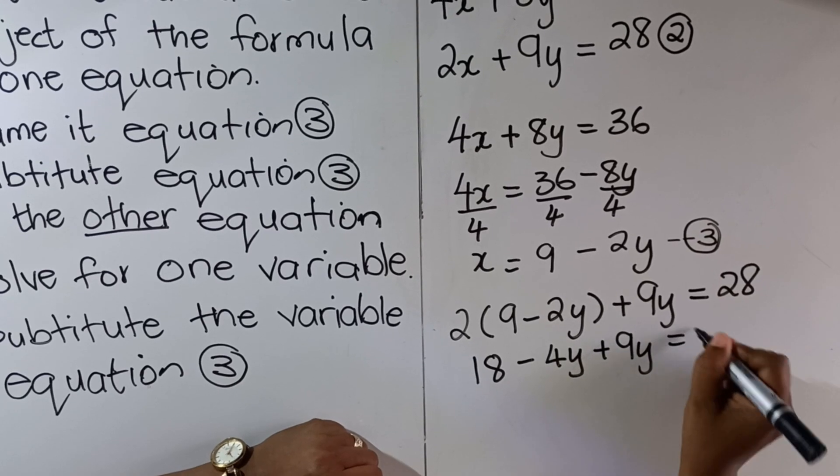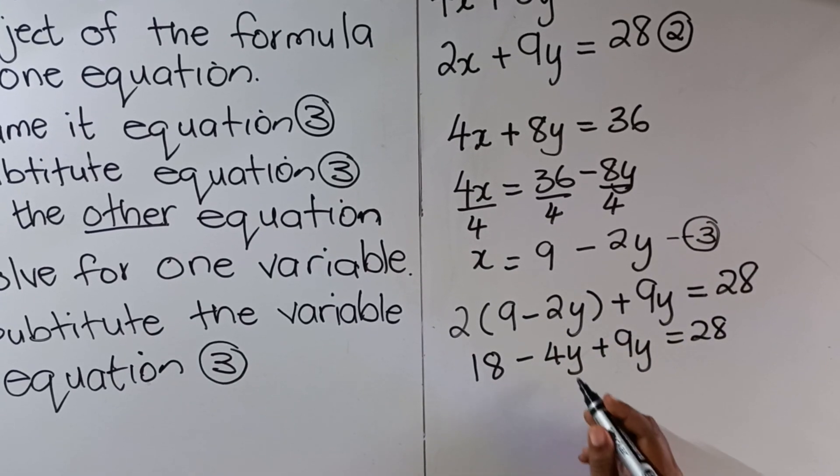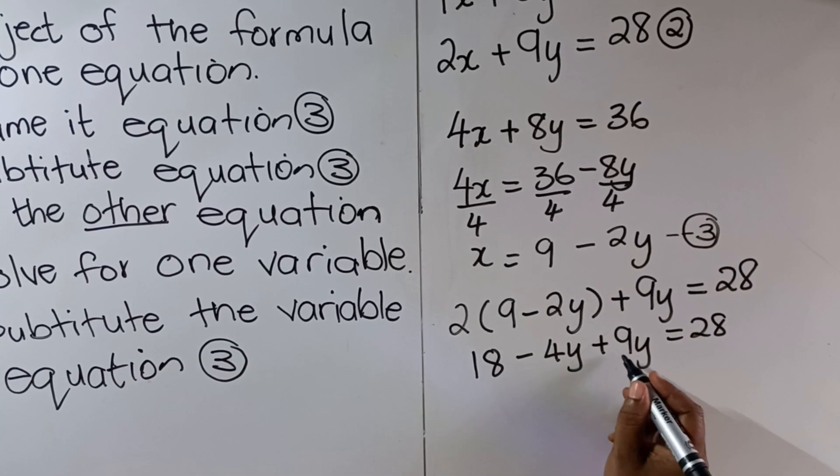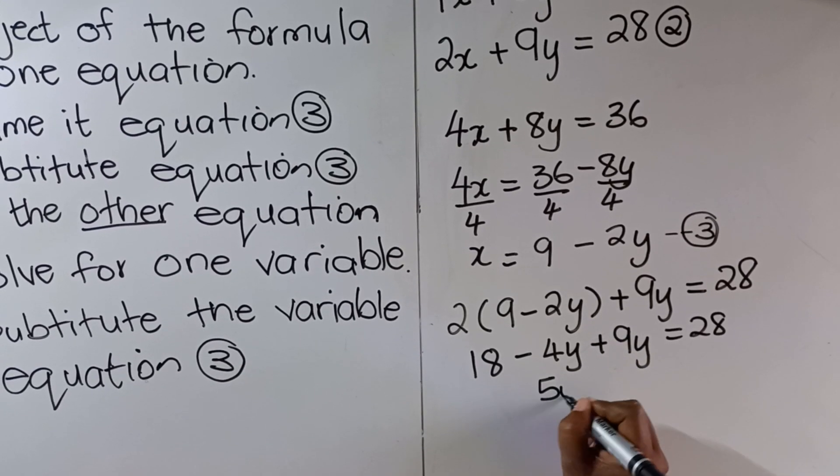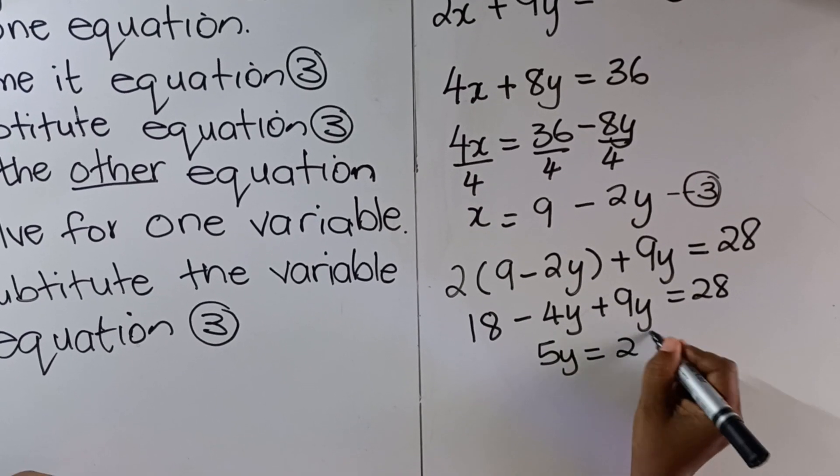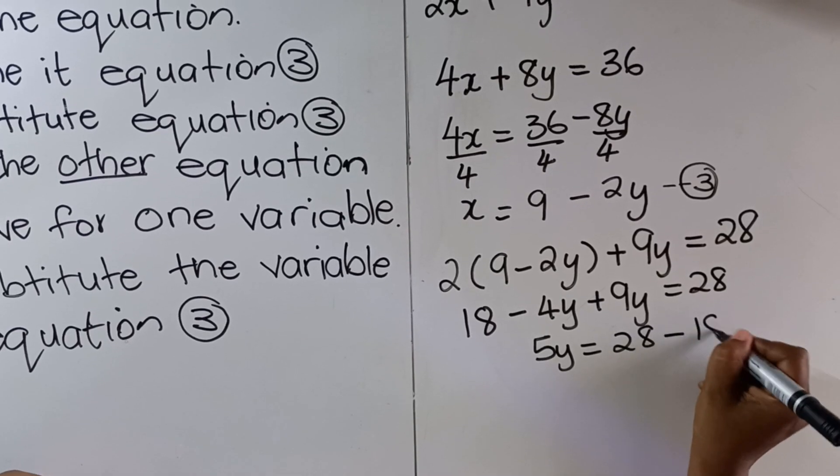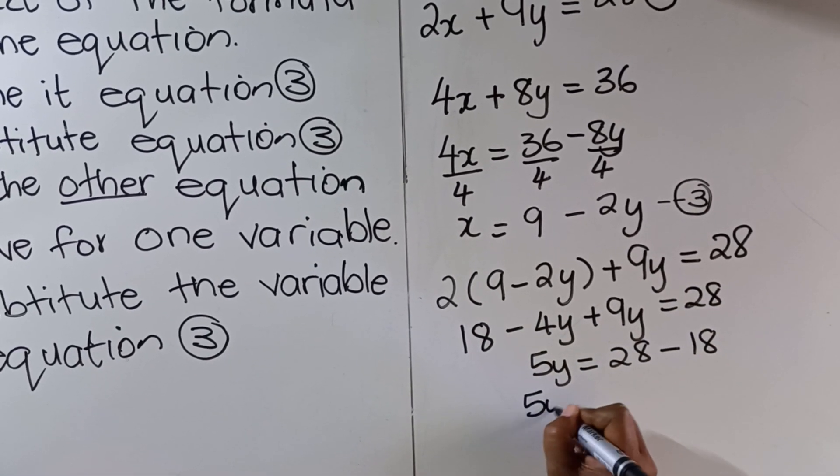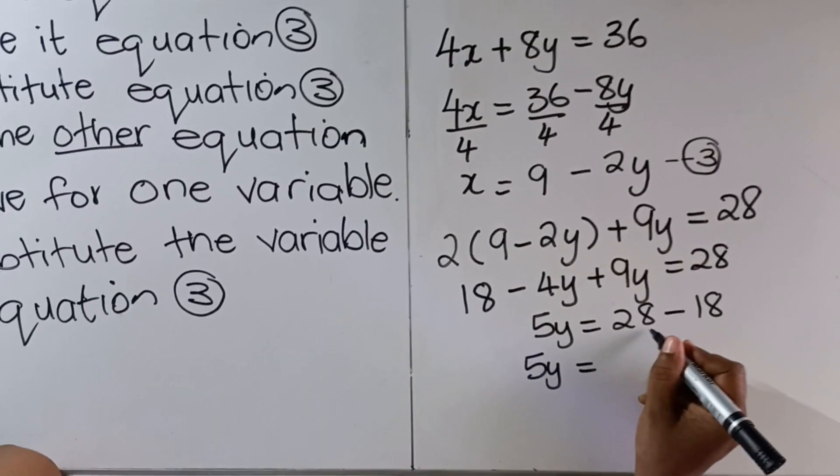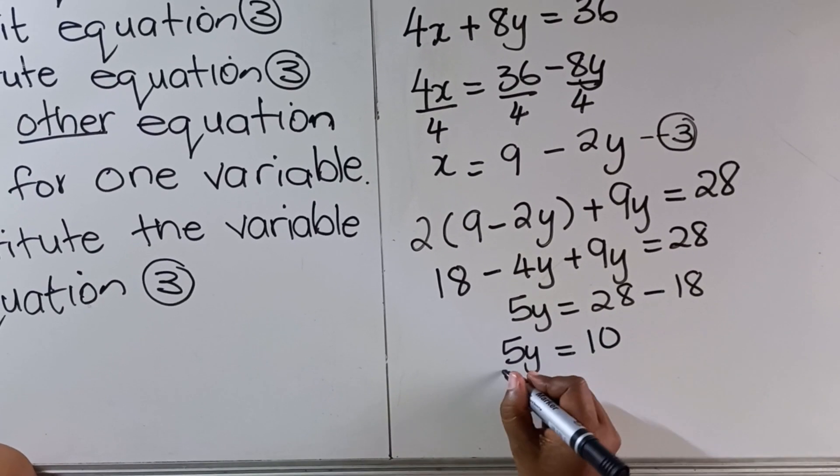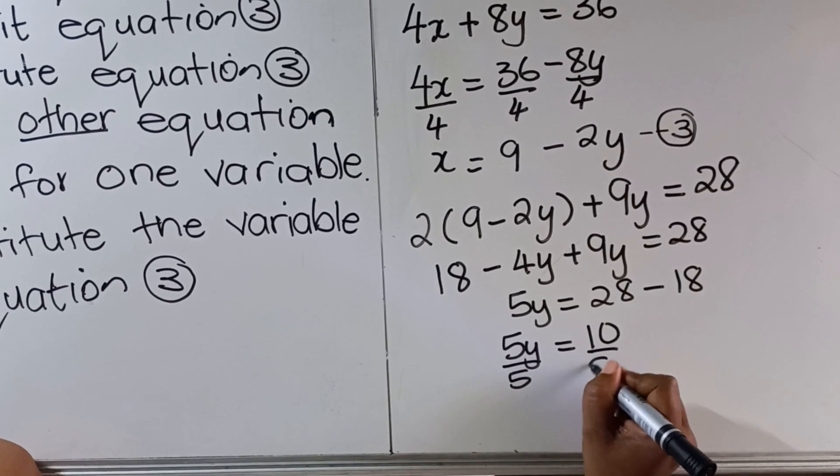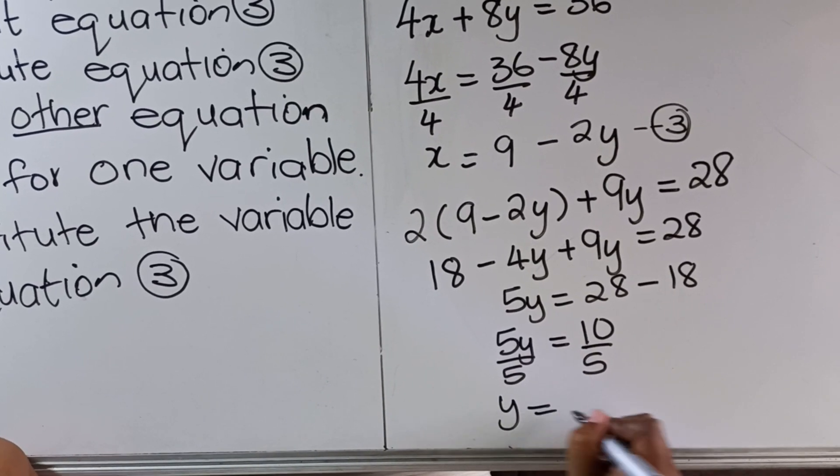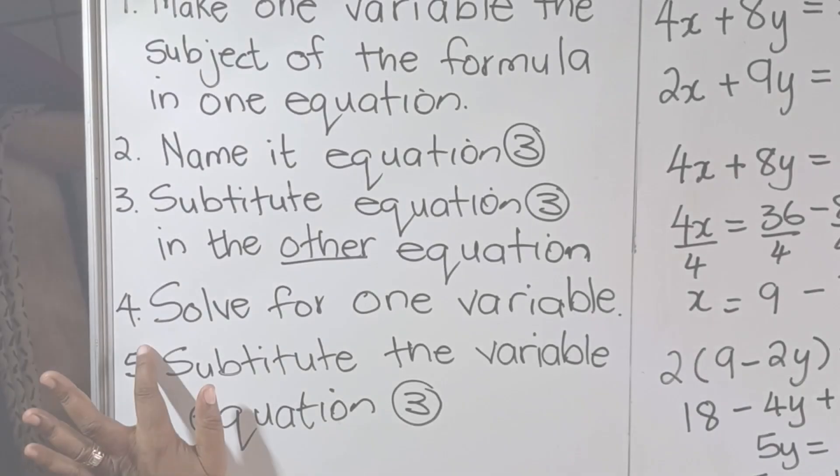And then 2 times 9 is 18, 2 times -2y is -4y, plus 9y = 28. Then I have -4y plus 9y, I'm going to have 5y = 28 - 18. I took the 18 to the other side. Then I have 5y = 28 - 18, which is 10. Divide by 5: y = 2.